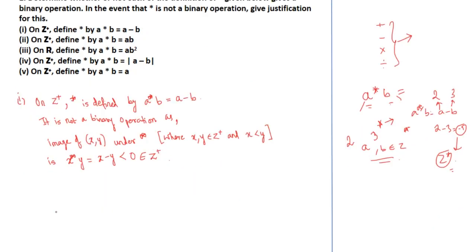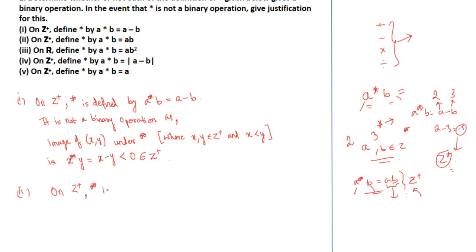Coming to the second part: we define a★b = ab on z+. This is very simple — if a and b are non-negative integers, then ab must also be either positive or zero. It will never be negative, and it will be a unique element within the domain. So we can clearly see this is a binary operation. On z+, star is defined by a★b = ab.